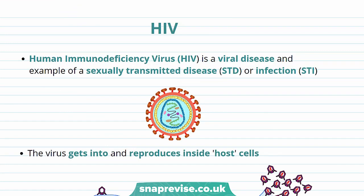HIV is a viral disease that affects a huge number of people. In 2015, globally, an estimated 36.7 million people were living with HIV. It's also called Human Immunodeficiency Virus, and it's an example of a sexually transmitted disease or STD. STDs can also be known as sexually transmitted infections, or STIs.